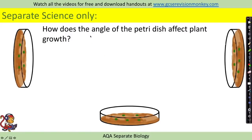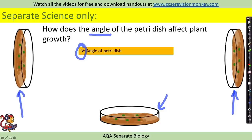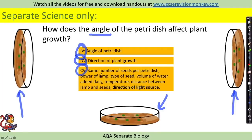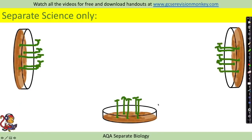Linking into tropisms, for geotropism we might look at how the angle of the petri dish affects plant growth. Set up petri dishes at different angles — for example 180°, 90°, 270° — and record plant growth. The independent variable is the angle of the petri dish; the dependent variable is the direction of plant growth. Control variables are similar to before, and importantly keep the direction of the light source and background lighting the same. As a result, we may expect the shoots to respond to gravity and grow upwards in all cases. You may also see experiments where you can observe the direction of root growth as well, so look out for those.